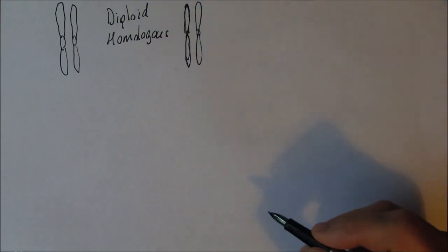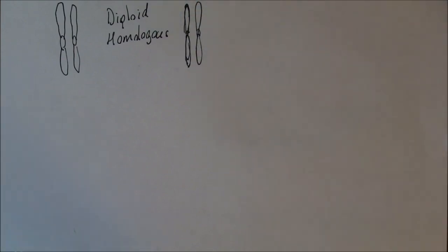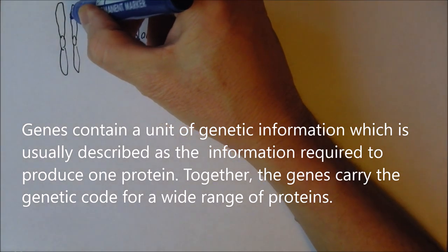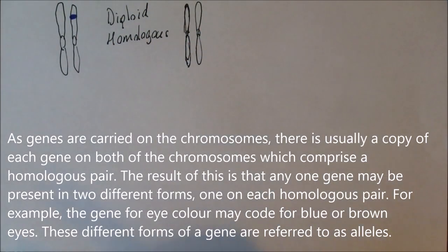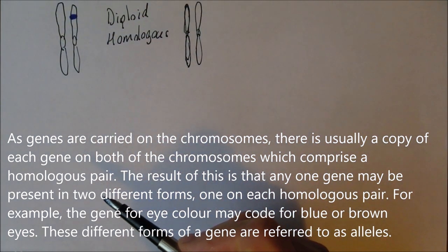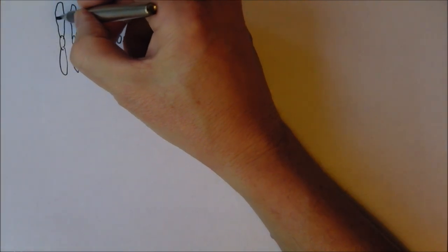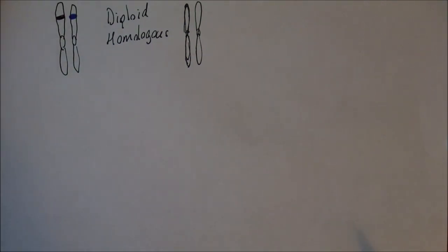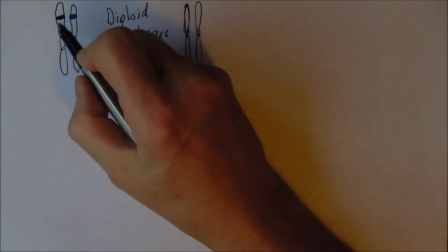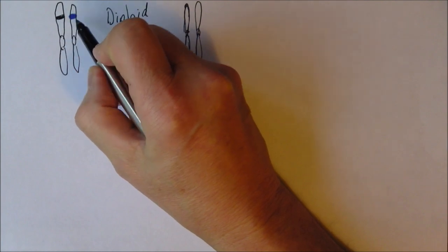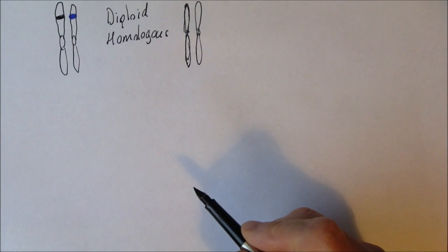The chromosomes carry the genes, so the genes are present on the chromosomes. For example, here we might have a gene for blue eye colour. Because the chromosomes are in pairs, the genes are also in pairs. We'll have an equivalent gene on the other chromosome in the same position — the same loci — but this gene is not necessarily the same. Because genes occur in pairs, a pair of genes are called alleles.